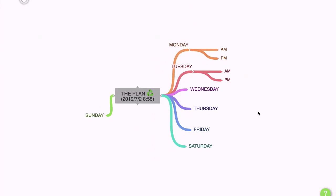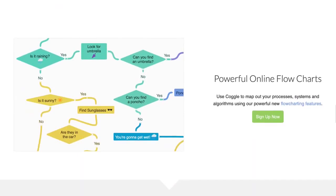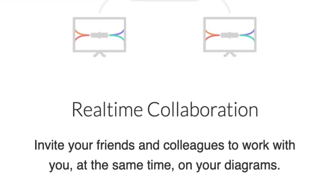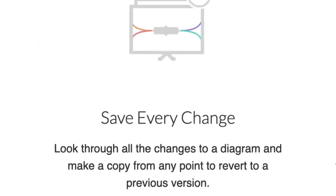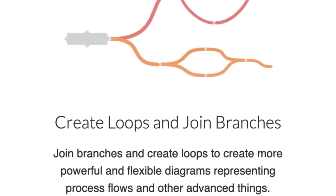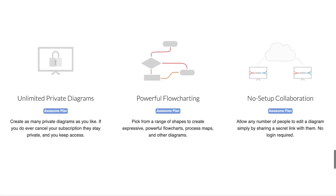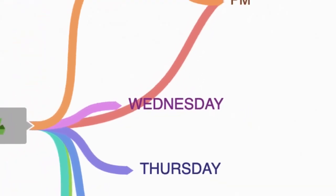All the processing happens on the Koggle servers. You can see here an example of how a Koggle diagram looks — and with Koggle you can actually create flowcharts, which is a godsend. Some of the awesome features are real-time collaboration, the ability to go back in history and revert to a previous version, unlimited image uploads, floating text and images, and the ability to create loops and join branches. With paid plans you get unlimited private diagrams, powerful flowcharting, and enhanced collaboration.